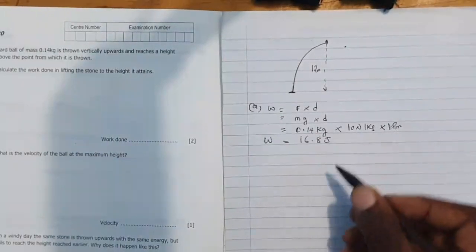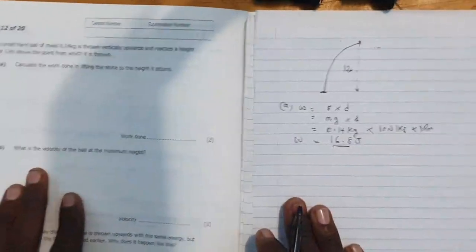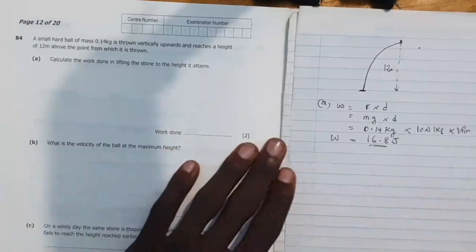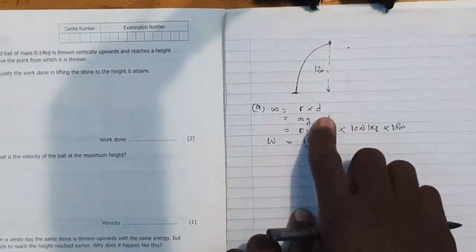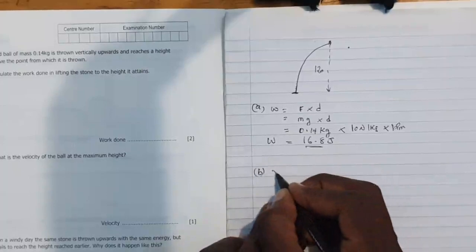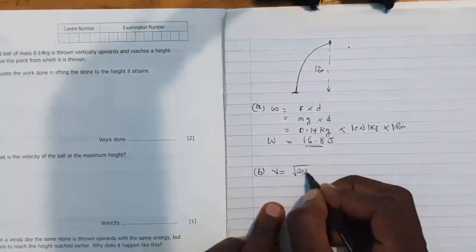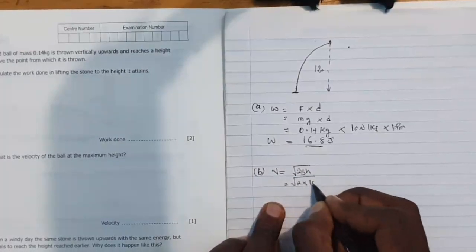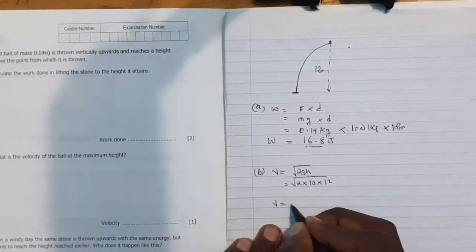Then part 2 says calculate what is the velocity of the ball at the maximum height. Now how do we find the velocity of the ball at the maximum height? Here's how: you can find the velocity equal to square root of 2gh. It should be square root of 2 times gravity is 10 times height is 12.